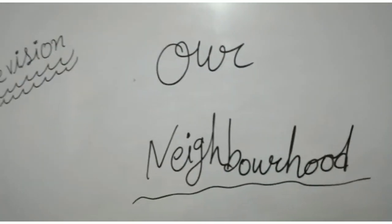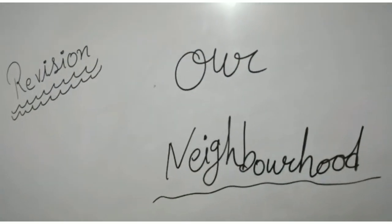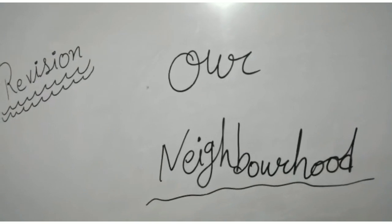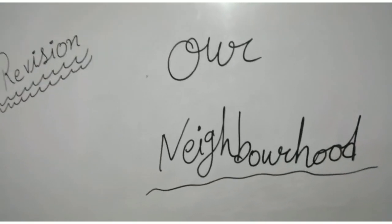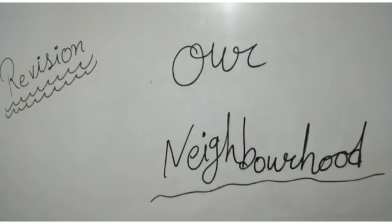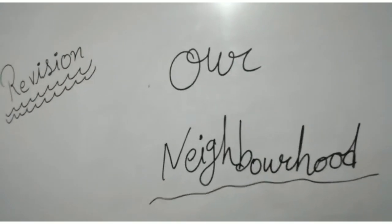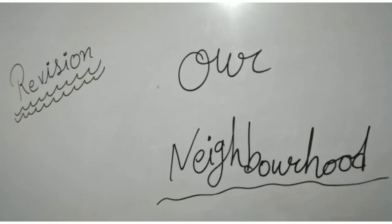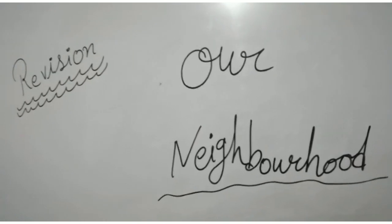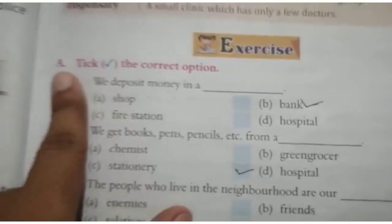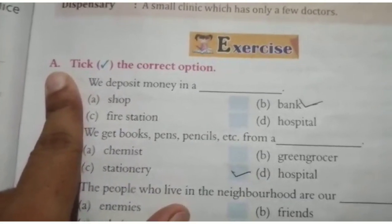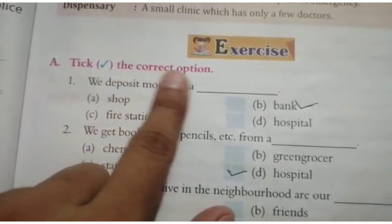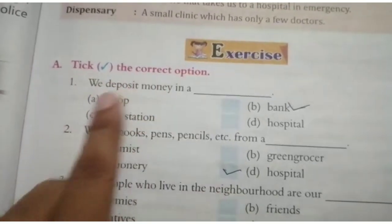In our previous video we revised this chapter's difficult words and word meanings. Today we revise the chapter exercise. Exercise A: tick the correct options.